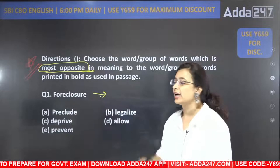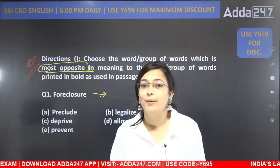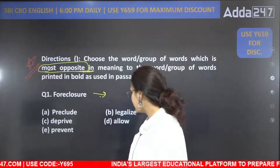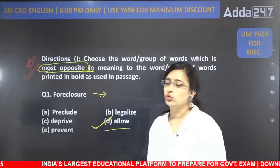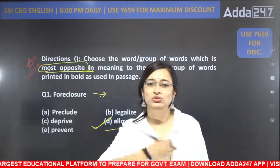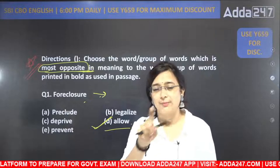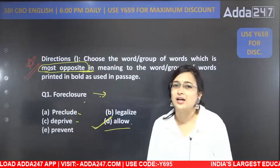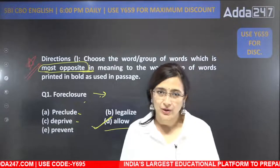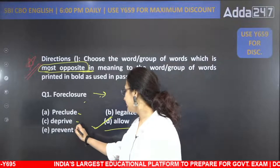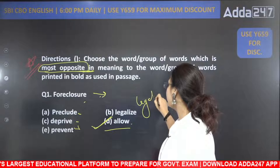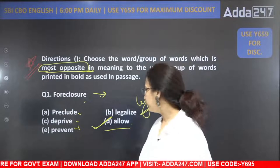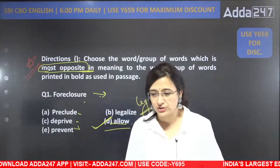Coming back to the question: foreclosure. Foreclosure ka matlab hota hai kisi bhi cheez ko bandh karwa dena legally — basically kabza laga lena, bandh karwana. The correct answer for this question is 'allow' — ussay hone dena. Foreclosure is not allowing; it is kabza karna, bandh karwana. Yaha pe bohot hi similar word hai 'preclude.' Deprive ka matlab hota hai jab kisi insaan ko koi cheez na mil paaye. Prevent ka bhi matlab hai rok tham lagana. Legalize ka matlab hai legally usse allowed kar dena — but that is a different ball game altogether.